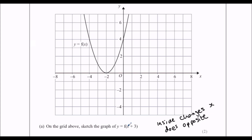So it says plus 3 — what's the opposite of plus 3? That's minus 3. So 1, 2, 3 in the negative direction. We're going to move each point back, looking for some nice points to draw — this one here as well: 1, 2, 3.